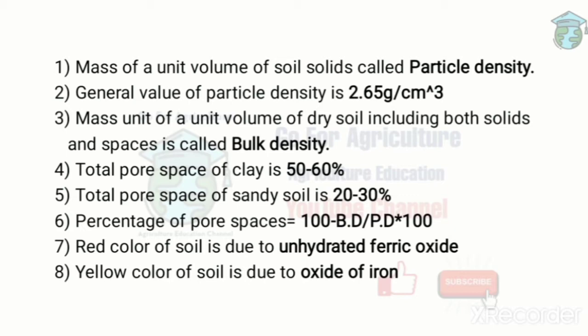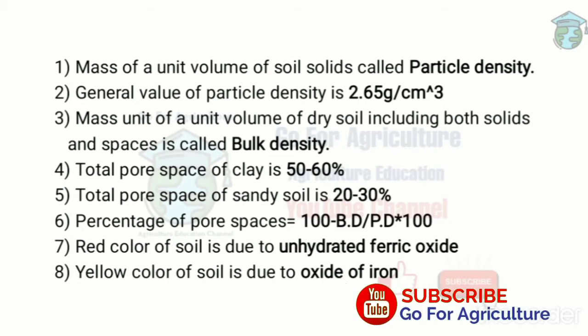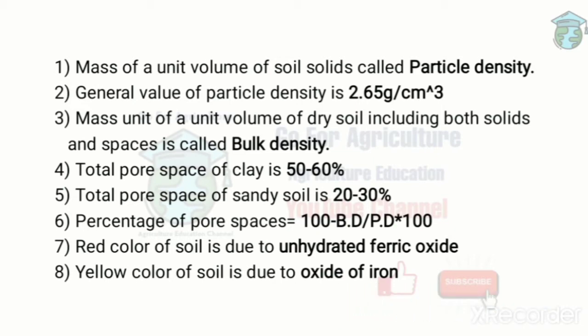What is particle density? Mass of a unit volume of soil solids is called particle density. It is denoted as PD. This was previously known as real specific gravity. The value of particle density in general is 2.65 gram per centimeter cube, and this is a constant value for all soils.